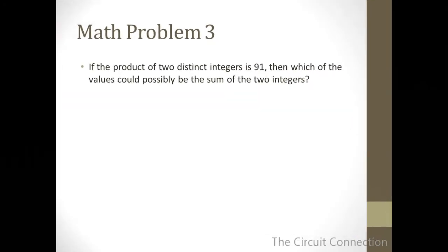Now on to our final problem in this problem set. Problem number three. If the product of two distinct integers is 91, then which of the values could possibly be the sum of the two integers? And the values that we have to choose from are negative 92, negative 98, negative 7, 12, and 20.